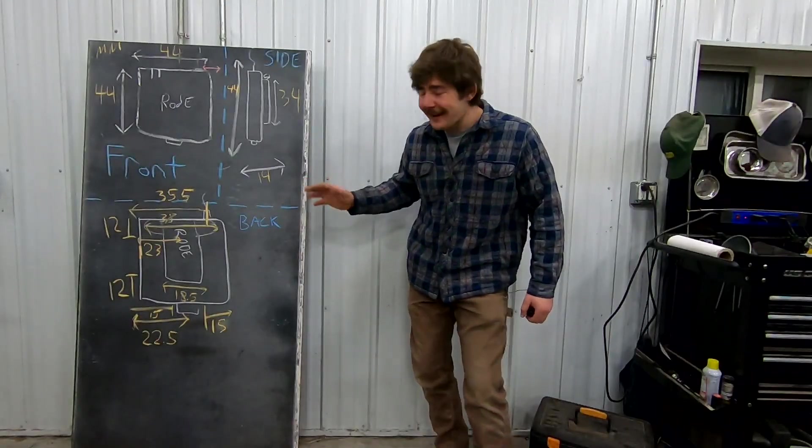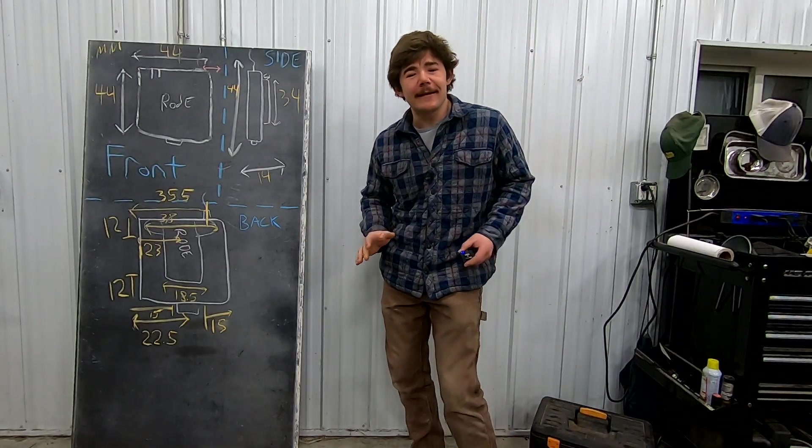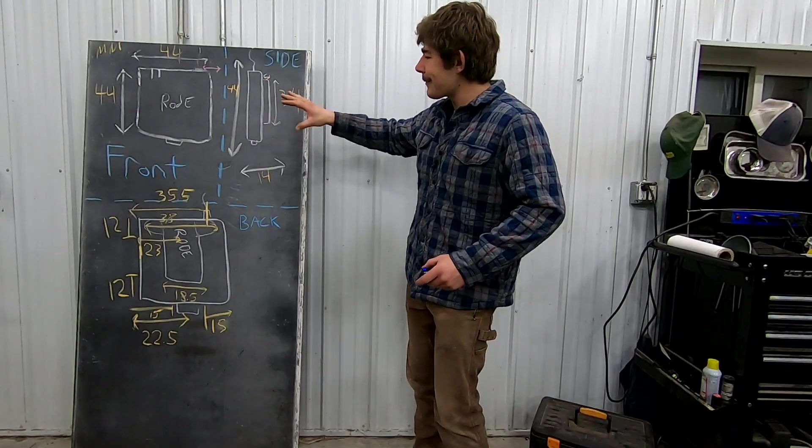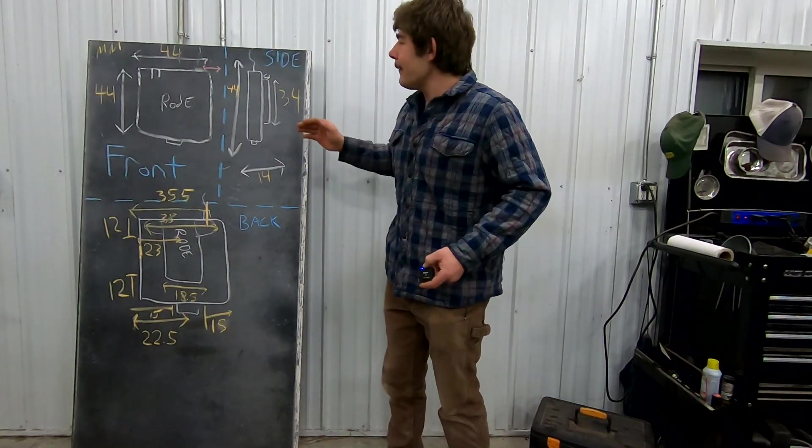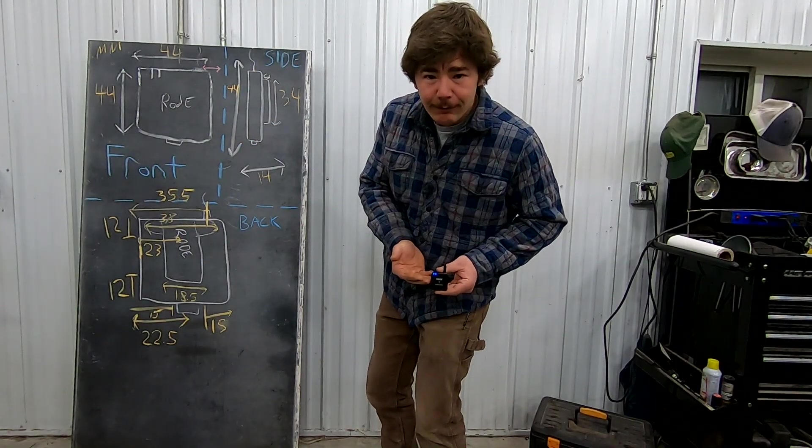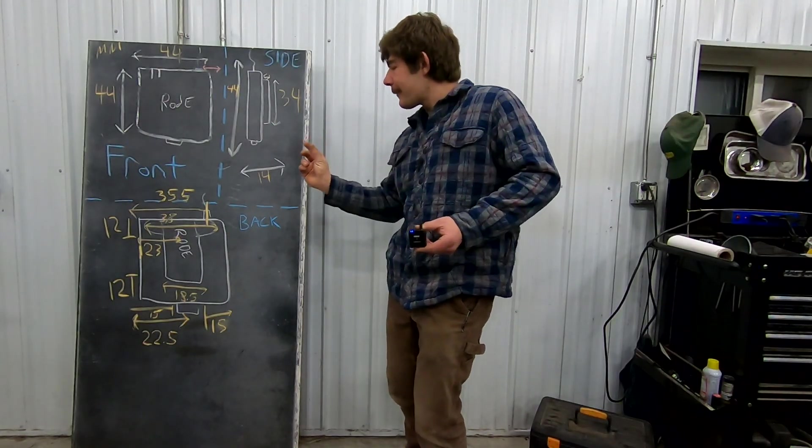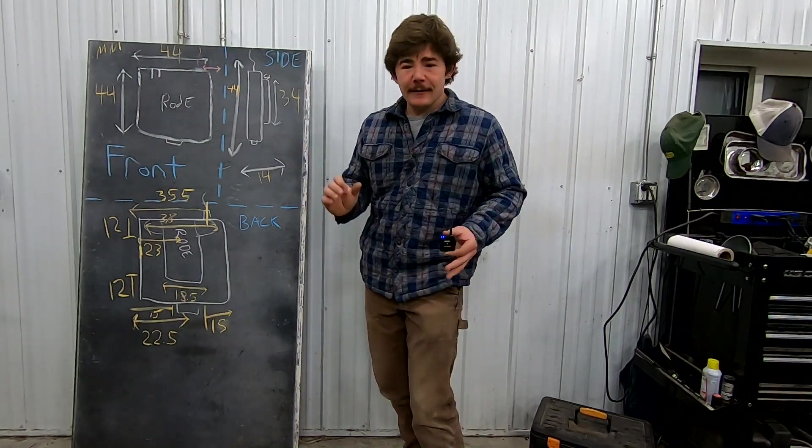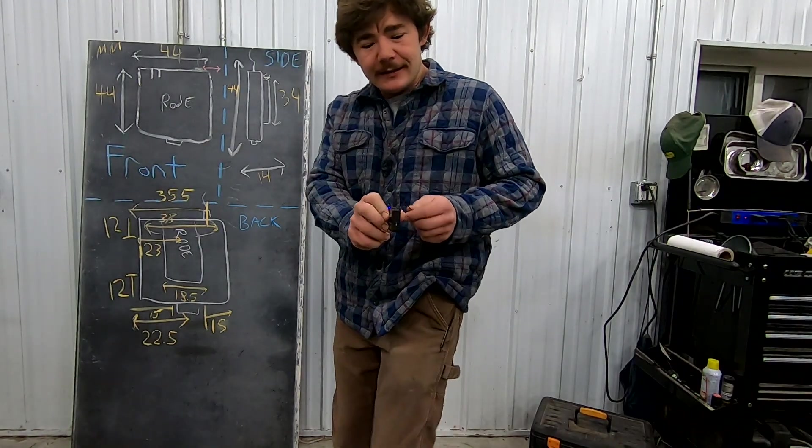I got done scribbling and I know it looks like a complicated mess, but it's really not that complicated. What we got going on on this chalkboard is a 2D model of our transmitter and all we're doing is trying to find our lengths and our widths and our heights. So this is just a square block. It's 44 millimeters by 44 millimeters and it's 14 millimeters deep.